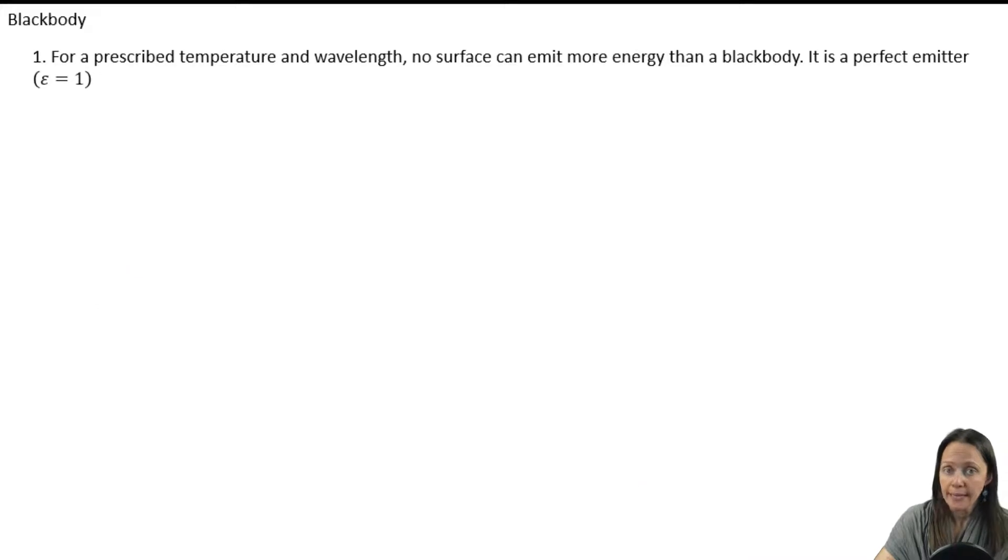All right. So a black body is a perfect emitter. It's got an emissivity of one. And we can use the things that we just now talked about regarding the emission from a black body, along with the emissivity to figure out emission from real surfaces, surfaces with emissivities that are less than one.